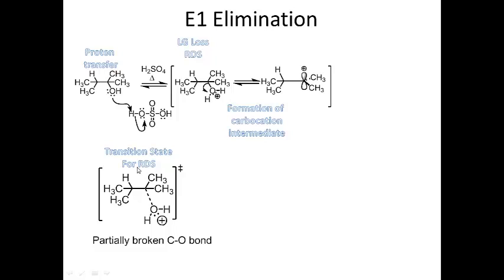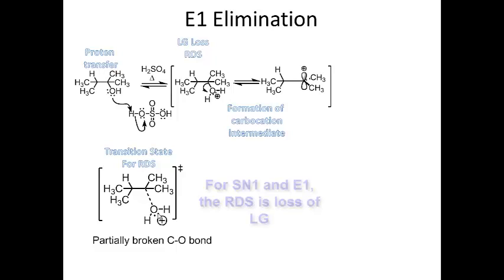If you look at the transition state, I have a partially broken carbon-oxygen bond, where these electrons are leaving with oxygen. This transition state looks like the SN1 transition state as well, because the rate-determining step is the loss of the leaving group.